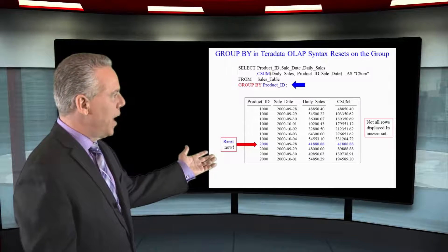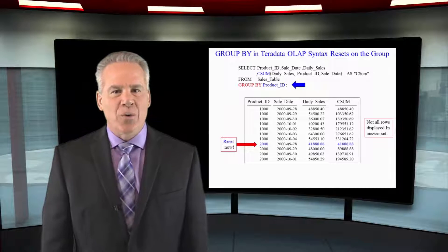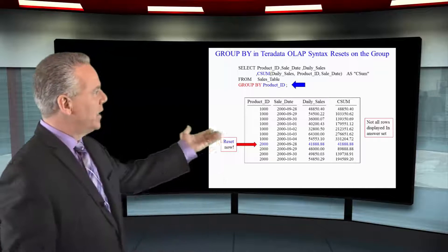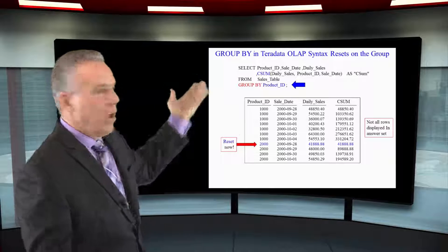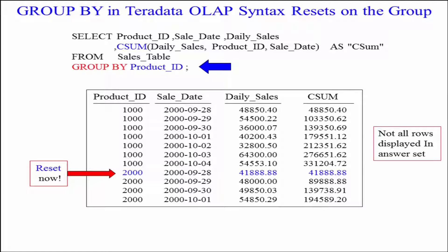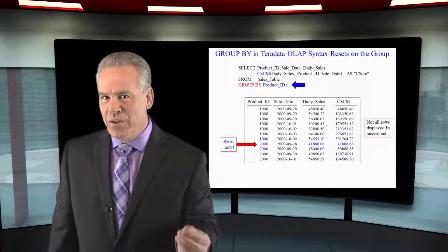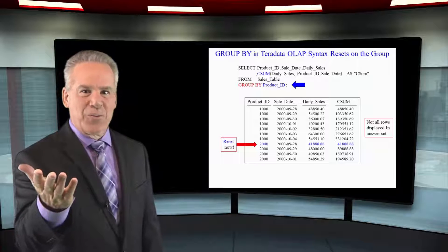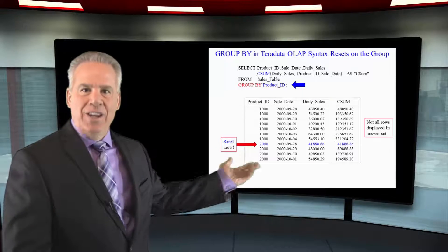Here we've got the GROUP BY statement, and what's that going to do? It's going to reset the CSUM calculation when there's a product ID break. Notice that we've sorted by product ID and sale date. I want you to see that up here, and also notice that it began the cumulative sum, but when there was a 1000 to 2000 product ID break, the CSUM started over. It's a good thing, but it's going to be inflexible in the future. I'll show you a better way with ANSI, but for now, if you want things to reset, GROUP BY is your buddy.